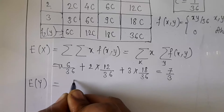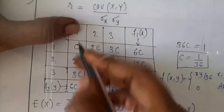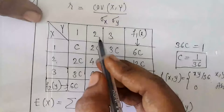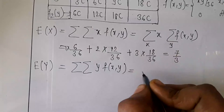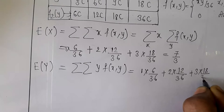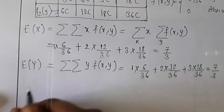Similarly, E[Y] = double summation of y times f(x,y). For y=1, the sum of f(x,1) over all x is 6c = 6/36; for y=2 it is 12/36; for y=3 it is 18/36. So E[Y] = 1×(6/36) + 2×(12/36) + 3×(18/36) = 7/3. Since row and column sums are the same, E[X] = E[Y] = 7/3.